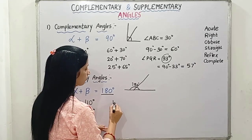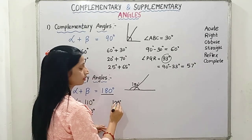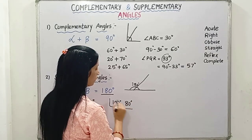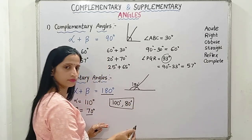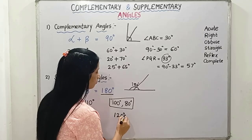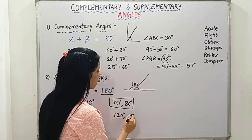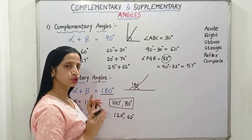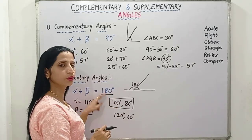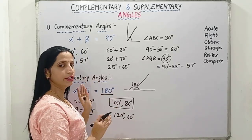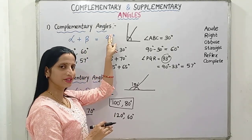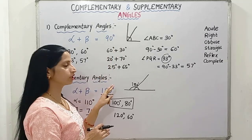Similarly, you can take any pair. 100 degrees and 80 degrees are also a pair of supplementary angles. For example, 120 degrees and 60 degrees are also a pair of supplementary angles. So any two angles which when added give us 180 degrees are known as supplementary angles, and two angles which when added give us 90 degrees are known as complementary angles.